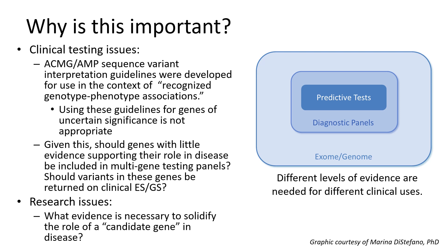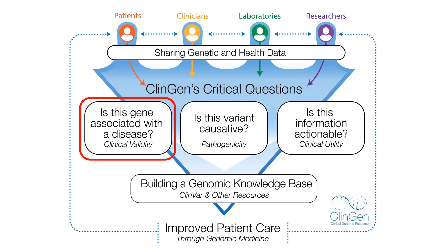Setting different thresholds of evidence supporting gene disease relationships may be helpful in both the clinical and research contexts. In clinical testing, we might consider utilizing different evidence thresholds in different testing contexts — perhaps only the most well-supported, well-understood genes should be considered for use in predictive testing in asymptomatic individuals, where the level of acceptable evidence might be broader in genome-wide assays such as exomes or genomes in affected individuals. In the research setting, having standardized evidence thresholds may help identify which types of evidence are needed to move genes from the research discovery phase into those that are truly appropriate for clinical care. Defining such evidence thresholds and a process by which to evaluate them is a key curation question for the ClinGen resource.